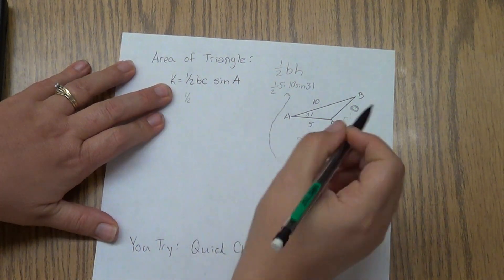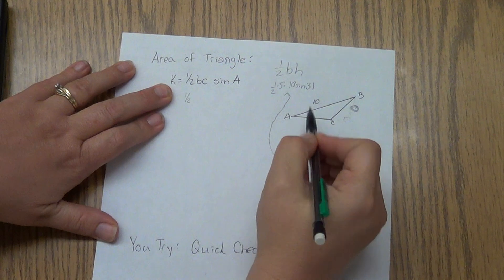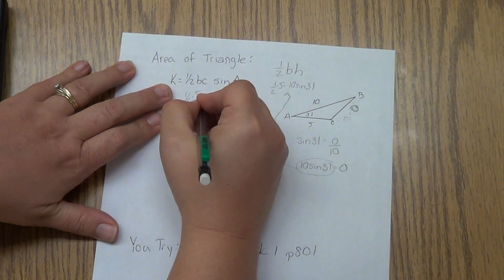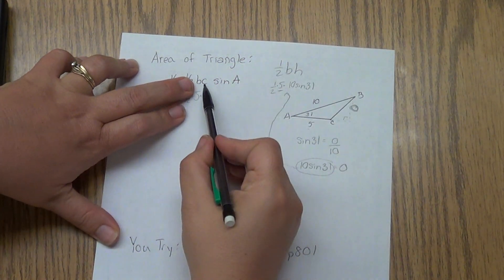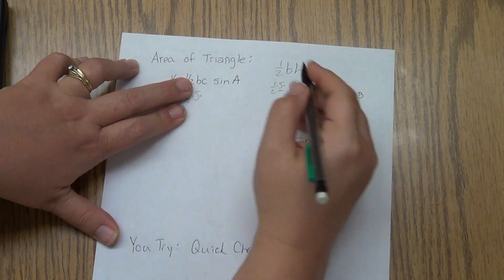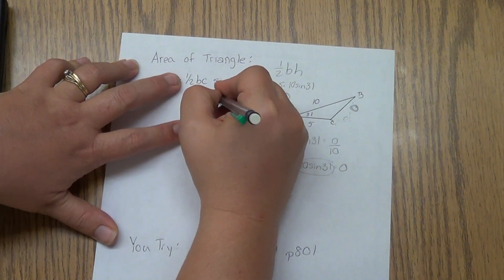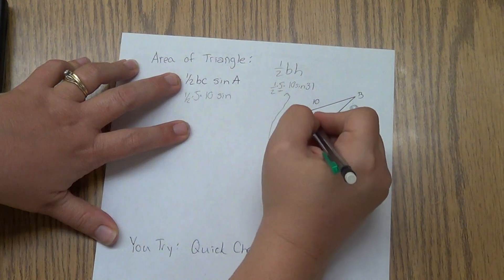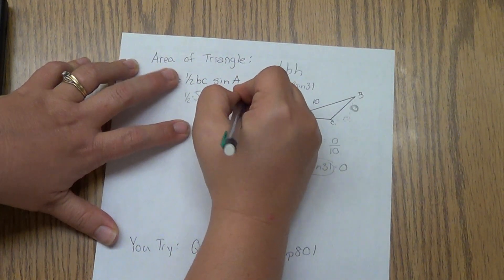One-half. Little b is 5, my base of my triangle here. Little c is 10 times the sine of my angle A, 31.